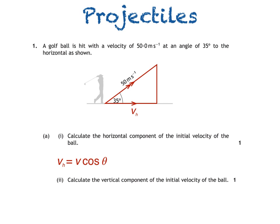Substituting our values into the equation, we get 50 cos 35 which equals 41 meters per second.